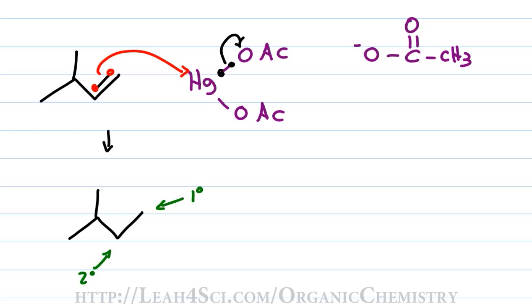In this case, the primary carbon would form a very unstable carbocation so it's safer to add the mercury acetate there. Notice the bond between mercury and carbon is the red electrons that used to be the pi bond on the starting alkene.